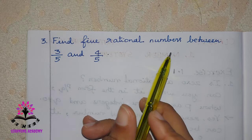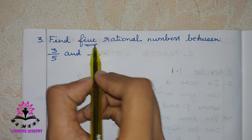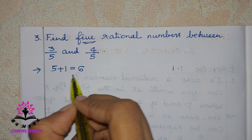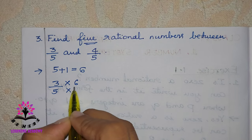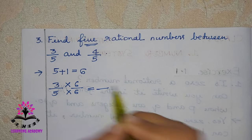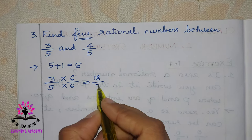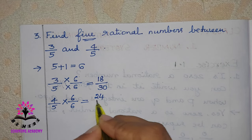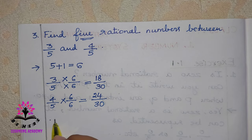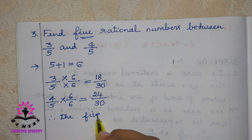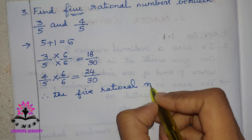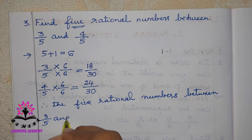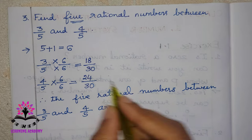The next question is: find 5 rational numbers between 3 by 5 and 4 by 5. They have asked for 5 rational numbers, so we add 1 to it — 5 plus 1 is 6. Write the first number, 3 by 5, and multiply and divide by 6. 3 times 6 is 18 and 5 times 6 is 30, giving 18 by 30. Now take 4 by 5 and multiply and divide by 6. 4 times 6 is 24 and 5 times 6 is 30, giving 24 by 30. Therefore the 5 rational numbers between 3 by 5 and 4 by 5 are between 18 by 30 and 24 by 30.